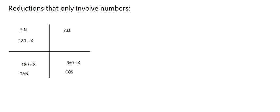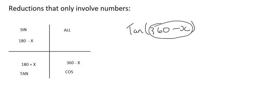In the previous video, we looked at the CAST diagram and how to reduce sin, cos, and tan functions that match it perfectly. For example, we looked at the tan of 360 minus x. We located that on the CAST diagram and said tan x, then checked if tan is positive or negative in that quadrant. Because that is a cos quadrant, tan was negative.